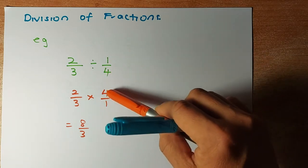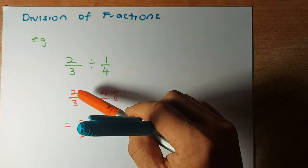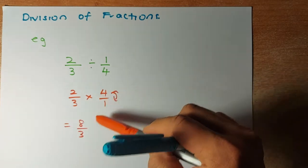The denominator becomes the numerator and the numerator becomes the denominator. And when you multiply them, 2 times 4 is 8, 3 times 1 is 3.